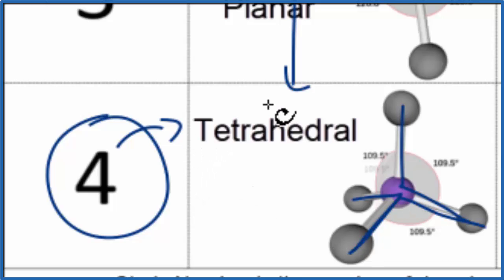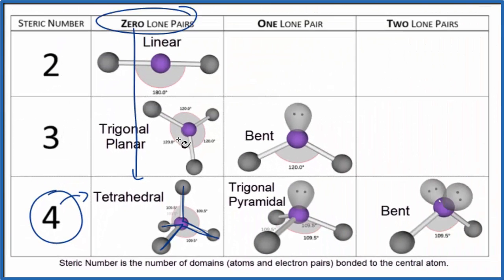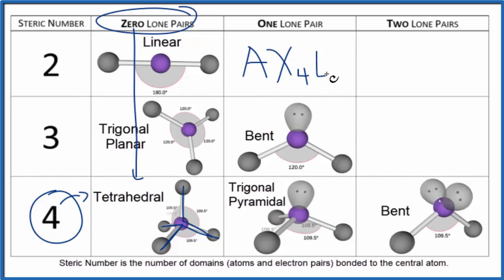We could also use the AXE notation to figure this out. A is the central atom — that's the xenon. X is the number of atoms attached to that xenon; we said there were four oxygen atoms. E would be the lone pairs, but we don't have any lone pairs, so we could write E0 or just leave that off. Then you would have memorized that AX4 is tetrahedral, or if you were allowed, you could look it up.